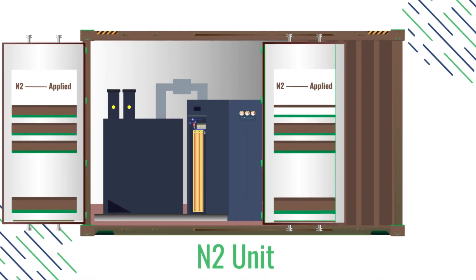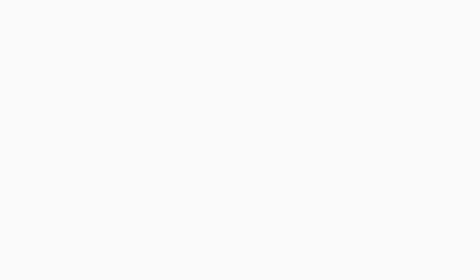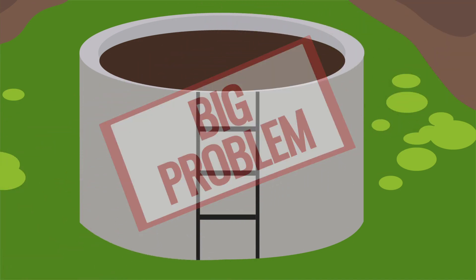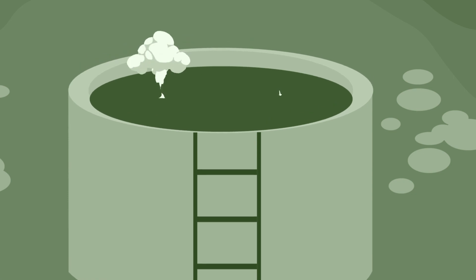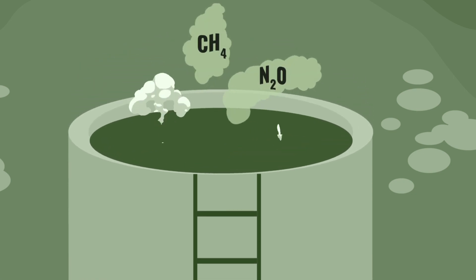This is the N2 unit. It addresses the one big problem with slurry, that while it's rich in nutrients, its emissions are very bad for the environment.